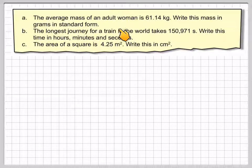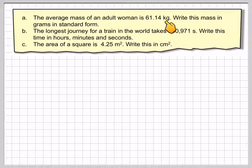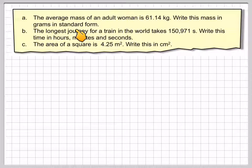The average mass of an adult woman is 61.14 kilograms. Write this mass in grams in standard form.